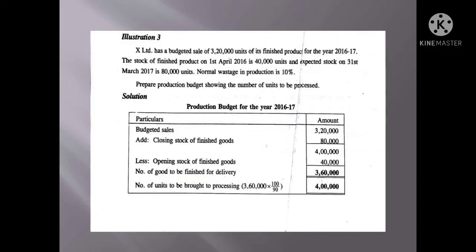We now have two problems on the production budget for Kerala University 6th semester. We are going to illustration 3. X-Limited has a budgeted sale of 3,20,000 units of its finished product for the year 2016-17. On April 1st, we have an expected opening stock of 4,20,000 units. On 31st March 2017, we have an expected closing stock of 5,20,000 units.